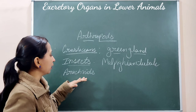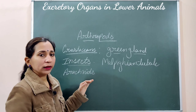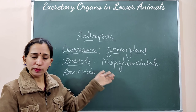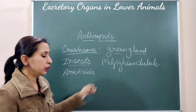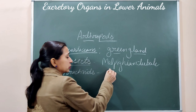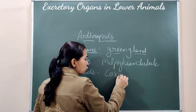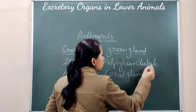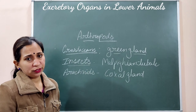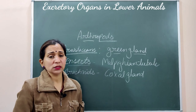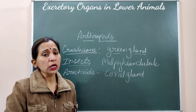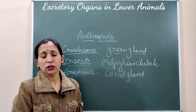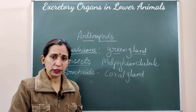Next, if we talk about arachnids — which include spiders and scorpions — their excretory organ is known as coxal glands. In addition to coxal glands, Malpighian tubules can also be found in arachnids. For myriapods such as millipedes and centipedes, the excretory organ is again Malpighian tubules.